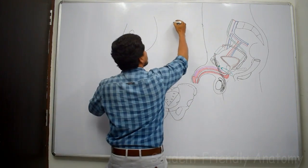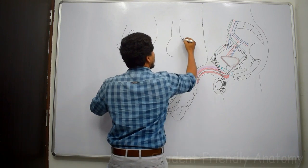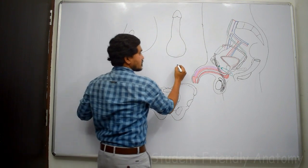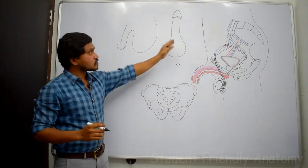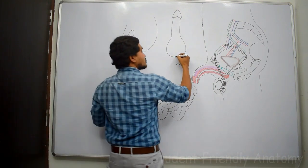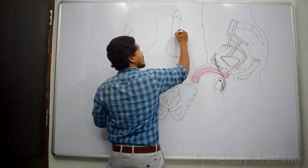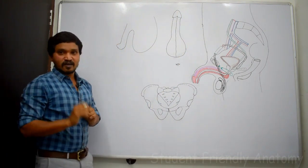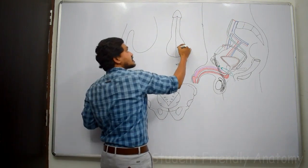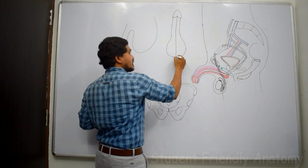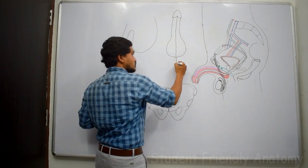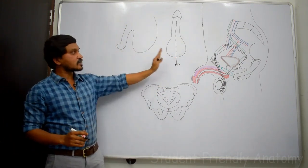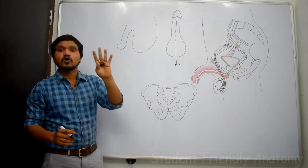If you see from the anterior view, this is penis and this is scrotal sac, and here you can find the anal canal. The scrotal sac is divided into two halves by one median raphae. This raphae anteriorly extends under the surface of the penis. Posteriorly, it extends through the middle of the perineum and reaches to the anus. This median raphae divides the scrotal sac externally into two halves.